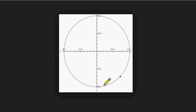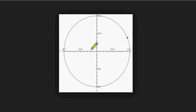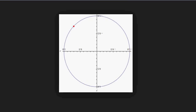The path traveled by the red dot is a circle, which is equal to a function of x. That function satisfies: f(x) = f(x+T) = f(x+2T) = f(x+3T), and so on. So this is a periodic function.